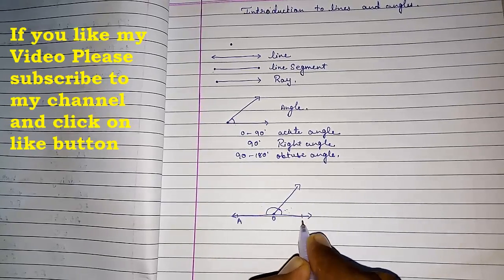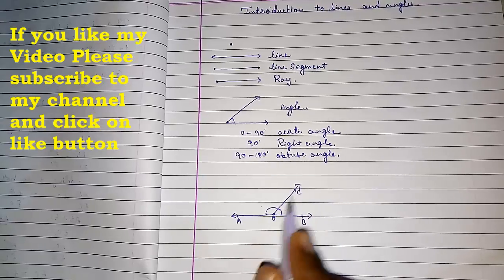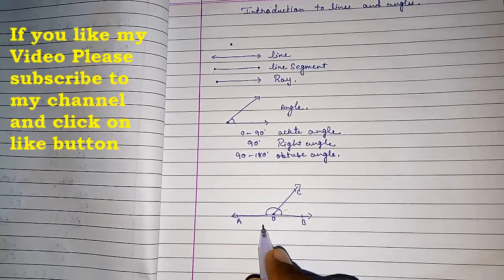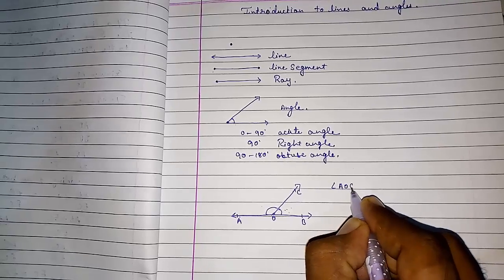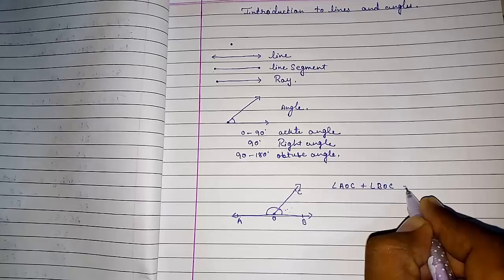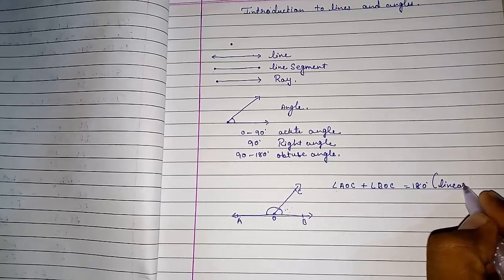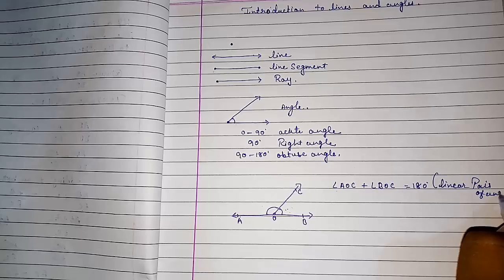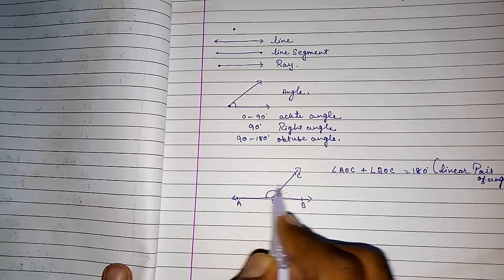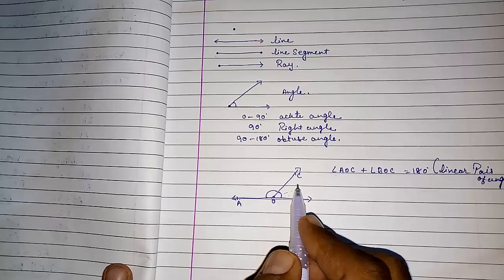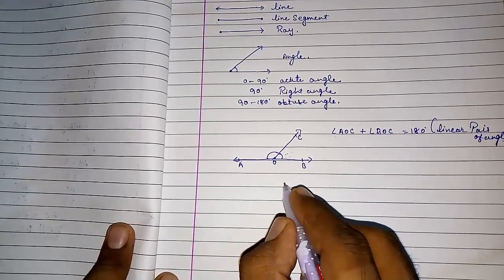Look at points A, O, B, and C. This angle is called angle AOC, or you can write angle COA. This angle is called angle BOC, or angle COB. So angle AOC plus angle BOC equals 180 degrees. This is called a linear pair of angles. The sum of all angles on a straight line — whether two, three, or four — is always 180 degrees.